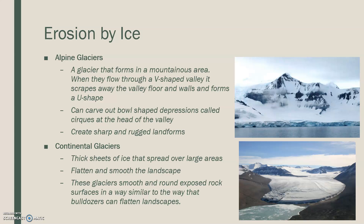Continental glaciers are thick sheets of ice that spread over large areas, like a continent — very large in size. They flatten and smooth landscapes, rounding exposed rock surfaces in a way very similar to how a bulldozer flattens soil. A continental glacier flattens the land in the form of ice.